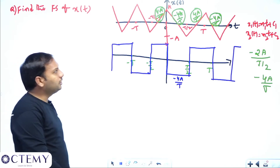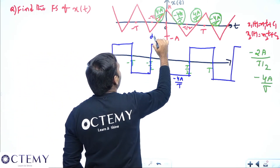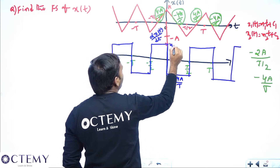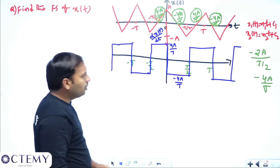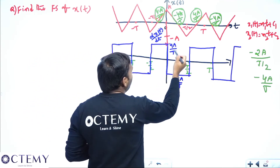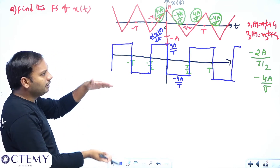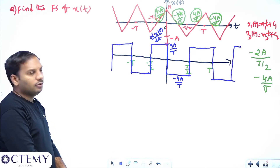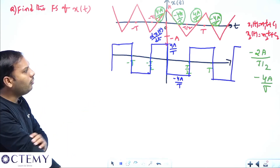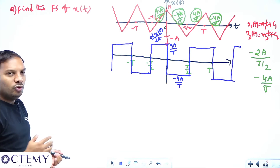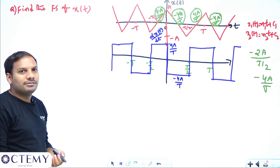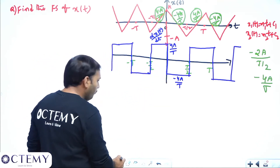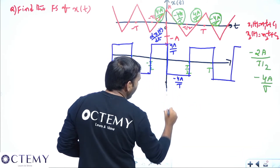This is dx(t)/dt. The height is 4a/T — it swings between +4a/T and -4a/T. The square wave has a maximum of +4a/T and a minimum of -4a/T. Now I will try to go for a second differentiation, because finding the Fourier series of this square wave directly is still difficult and would take a lot of time.